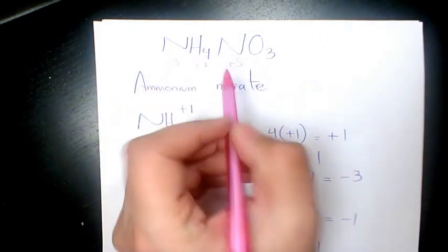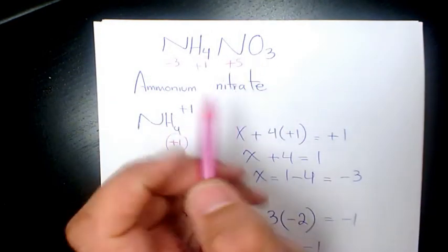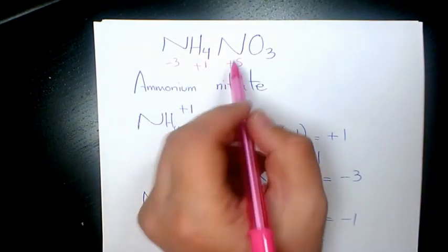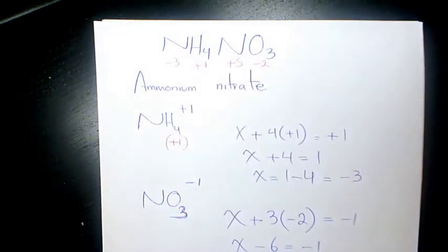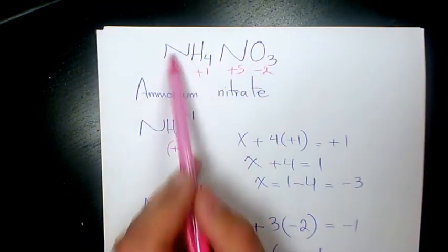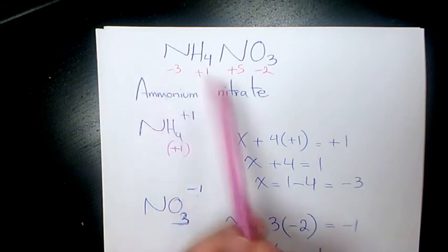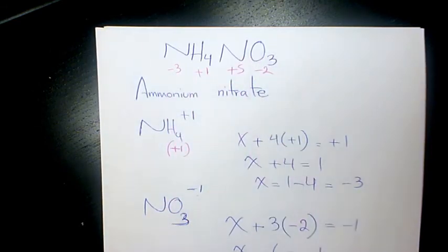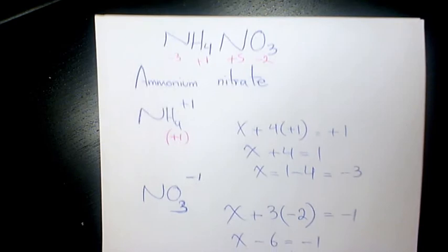So we can write plus five as the oxidation number for nitrogen here, and for oxygen is negative two. As you see, nitrogen in ammonium is negative three and nitrogen in nitrate is positive five.